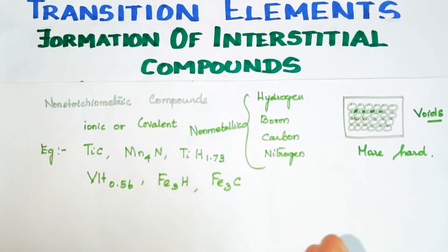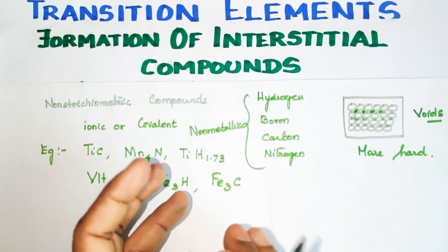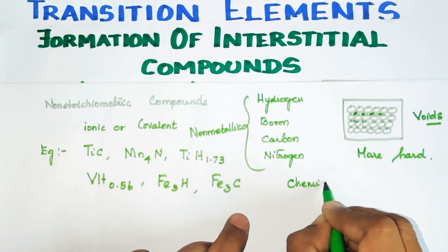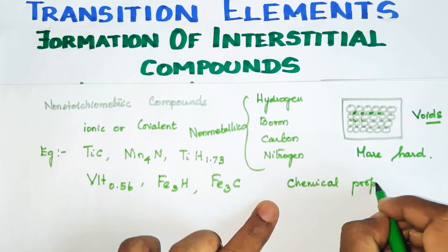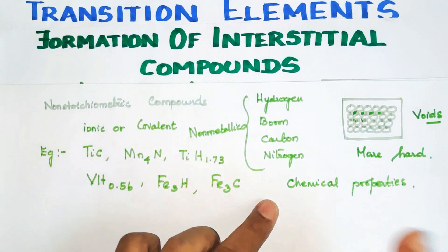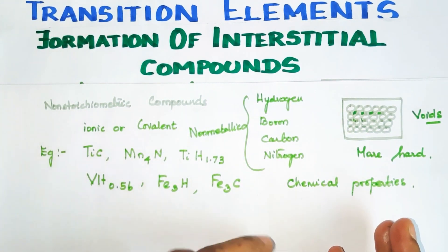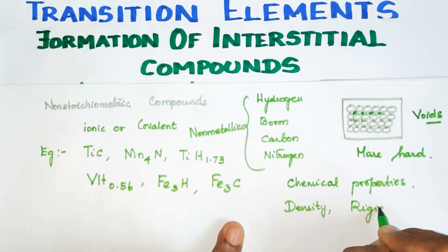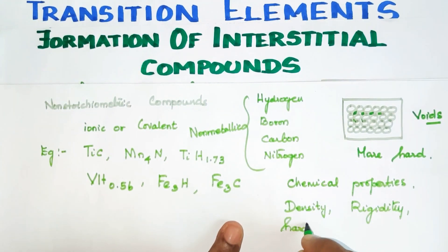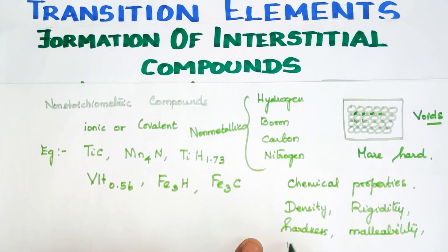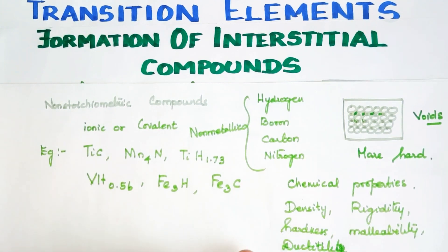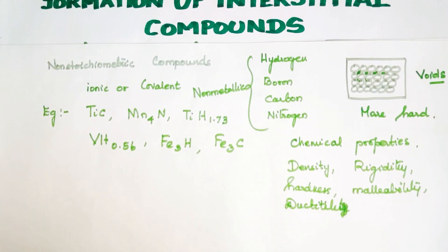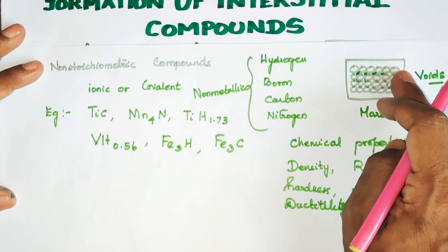When interstitial compounds are formed, the chemical properties of the parent metal remain as such — chemical properties are not altered. However, physical properties such as density, rigidity, hardness, malleability, and ductility do change. This is the most important thing — you can compare interstitial compounds with alloys.